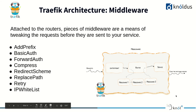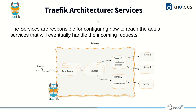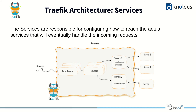The flow is: request comes in through entry points, goes to routers, then optionally through middlewares which apply tweaks, and finally reaches the service. Services are responsible for configuring how to reach the actual servers handling incoming requests — they map to the actual application servers. Load balancing and stickiness are handled by services.